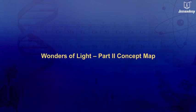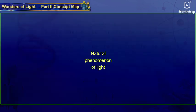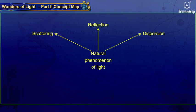Wonders of Light Part 2 Concept Map. Light can undergo scattering, reflection, dispersion, or refraction.